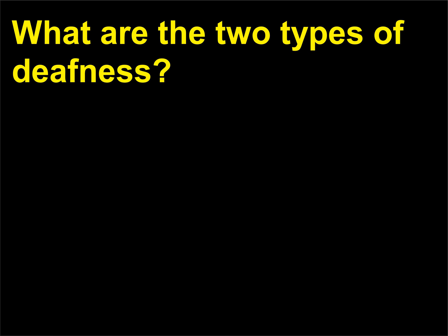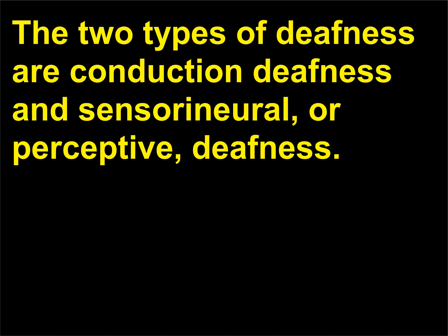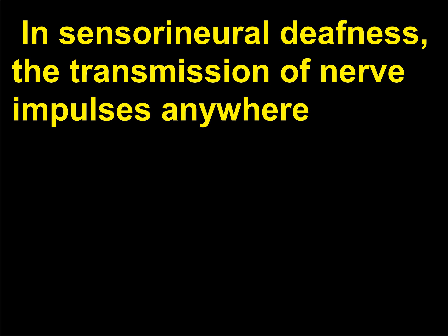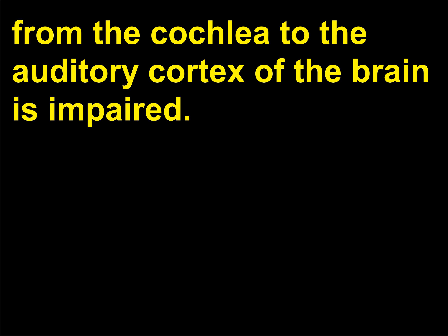What are the two types of deafness? The two types of deafness are conduction deafness and sensorineural (or perceptive) deafness. In conduction deafness, the transmission of sound waves through the middle ear is impaired. In sensorineural deafness, the transmission of nerve impulses anywhere from the cochlea to the auditory cortex of the brain is impaired.